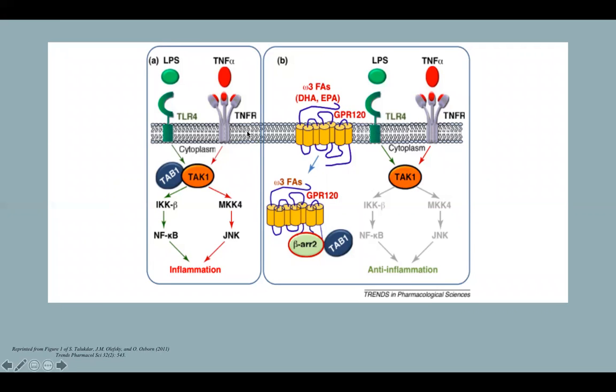As shown in the figure on the left, bacterial infection leads to lipopolysaccharide and TNF-alpha production and signaling through these receptors which causes inflammation. On the right, when omega-3 fatty acids are present, signaling through FFAR4 causes hijacking of a key player in the signaling event.